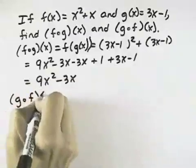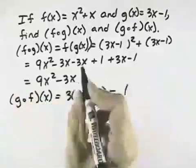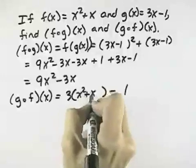Going the other direction, g composed with f of x just says start with our function g, but take the x out and replace it with our function f, which is x squared plus x.